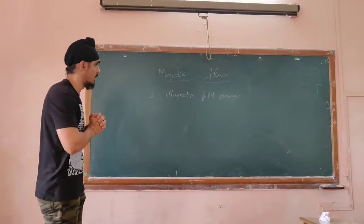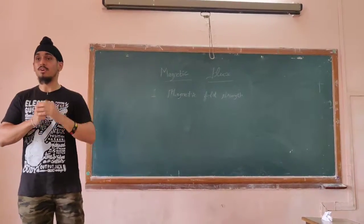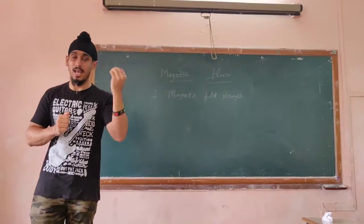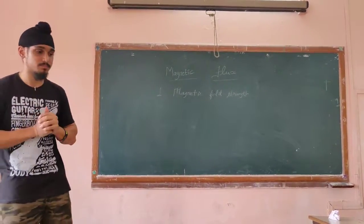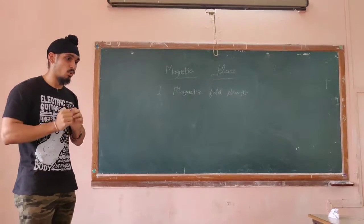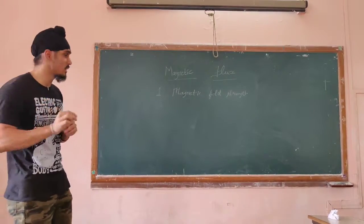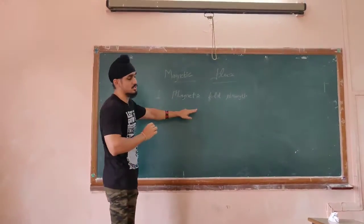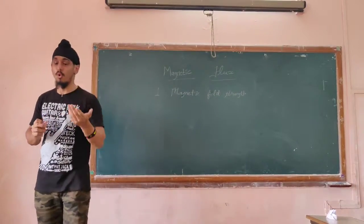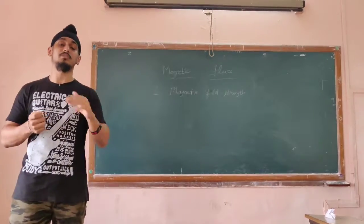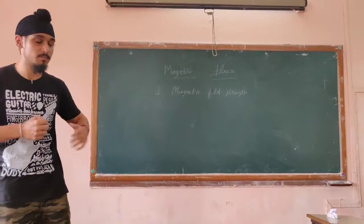Let's understand what is magnetic flux. Magnetic flux actually stands for the amount of magnetic field lines passing through a given surface. One of the factors it depends on is magnetic strength. If the magnetic strength is more, the magnetic field lines passing through that object will be greater compared to that of a lesser one.